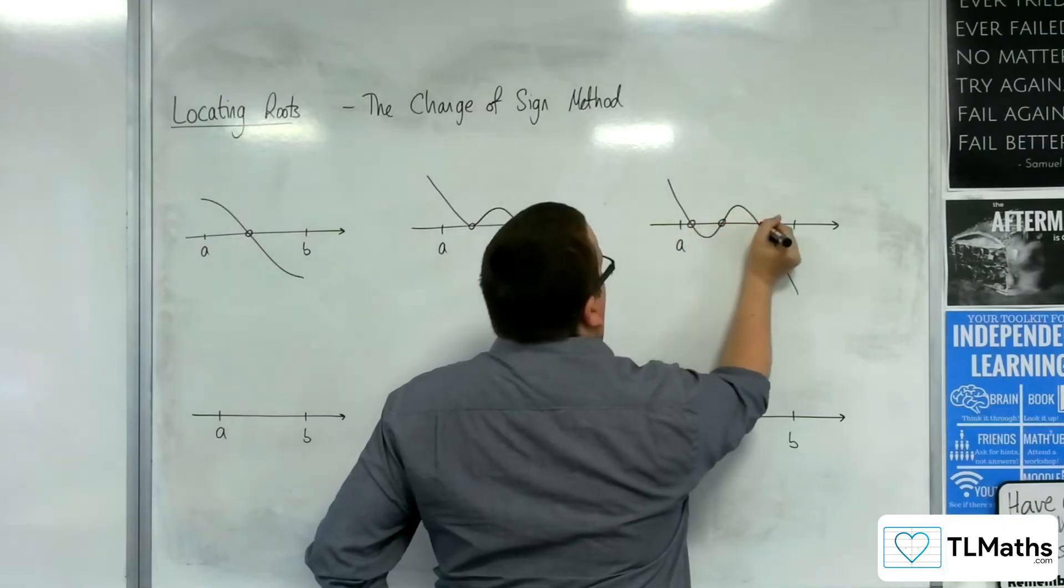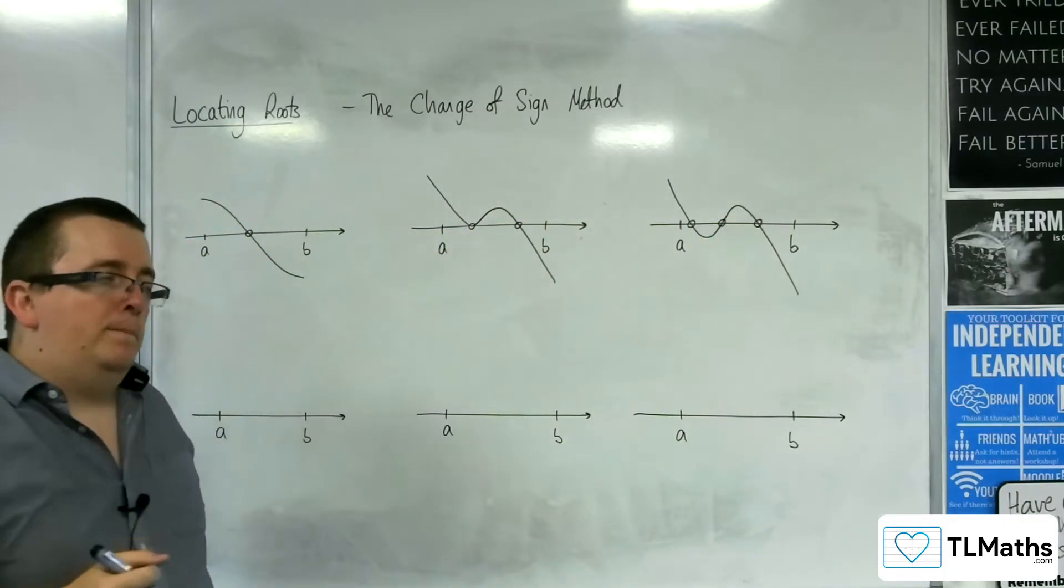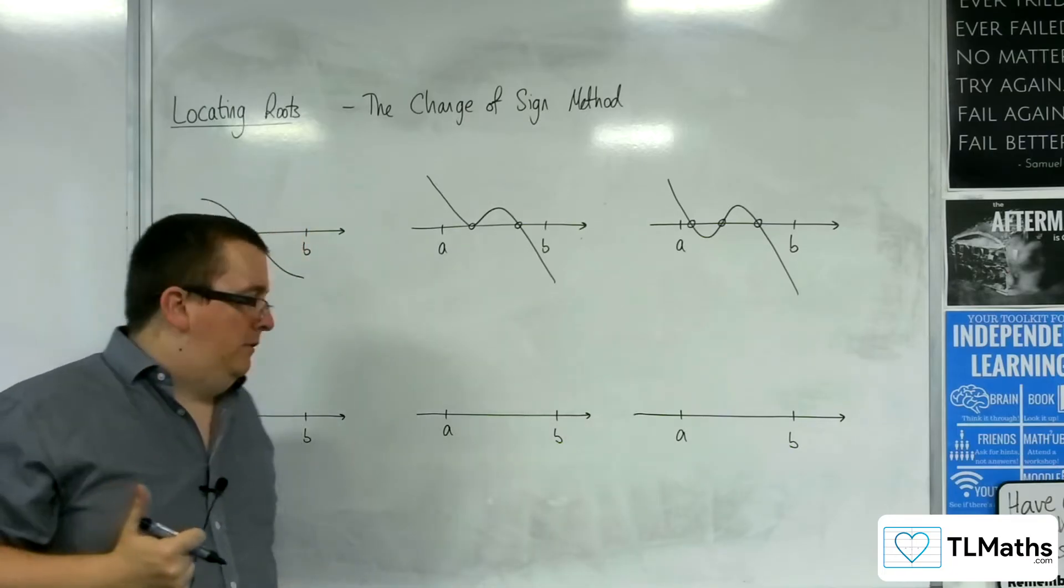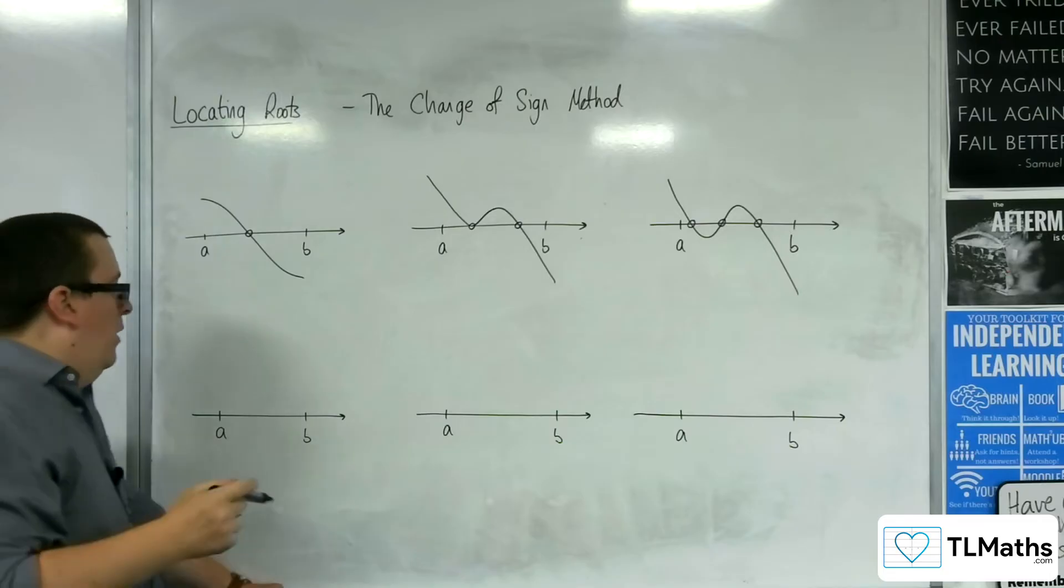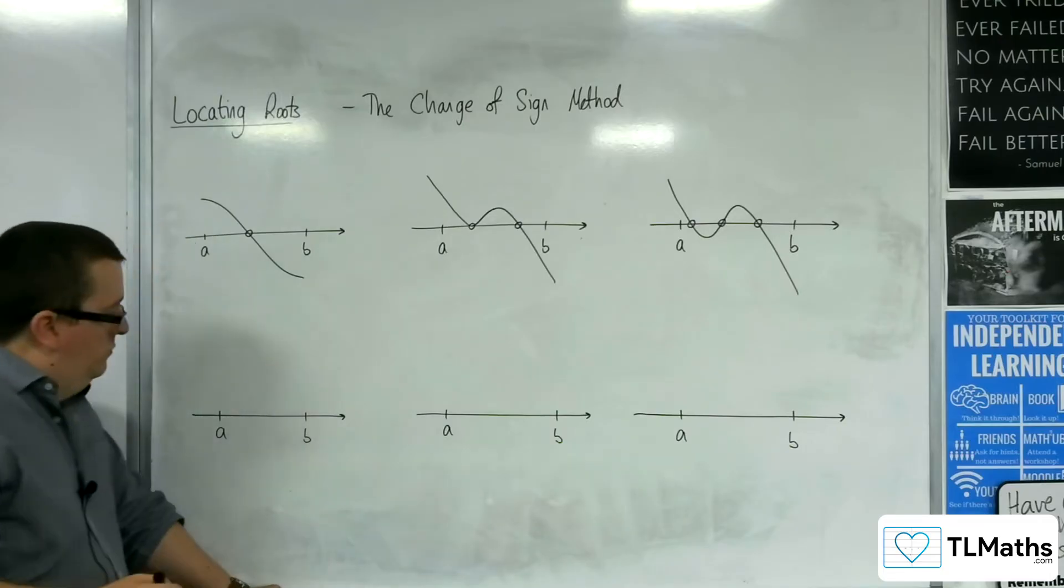So what happens then when one of those bits of information isn't there? So let's say we don't have a change of sign. What happens then? Does that mean that there are no roots? That's the question.